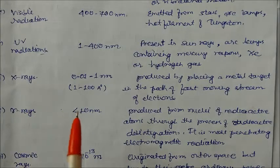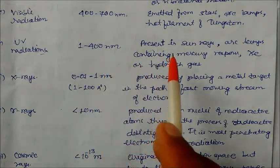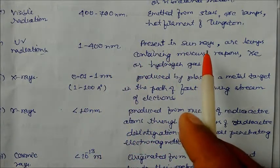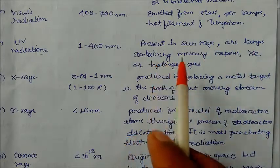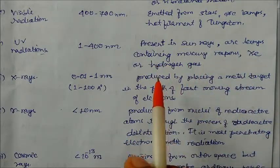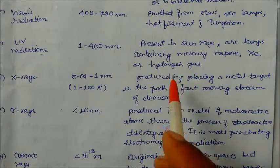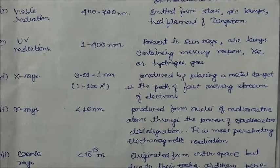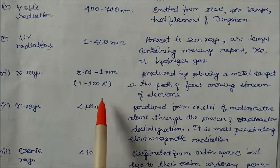Ultraviolet radiation has a wavelength of 1 to 400 nanometers. It is present in sunrays and arc lamps containing mercury vapor, xenon, and hydrogen gas — these are the sources which produce ultraviolet radiation.